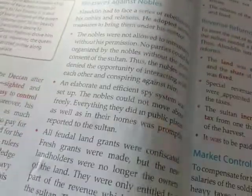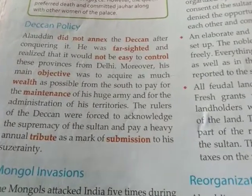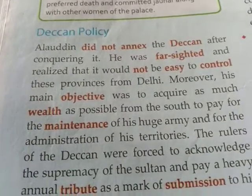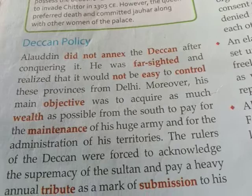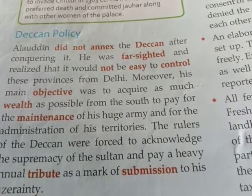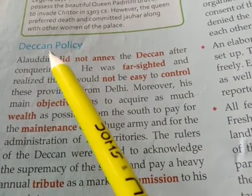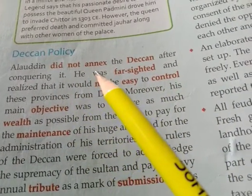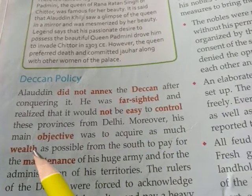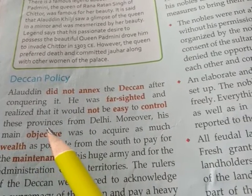Today we will discuss some policies that Alauddin Khilji made in order to conquer. After conquering North India, he wanted to conquer South India as well. So he made a policy and attacked South India. Here we have to study the Deccan policy. The Deccan refers to the provinces of South India. Alauddin did not annex the Deccan after conquering it.